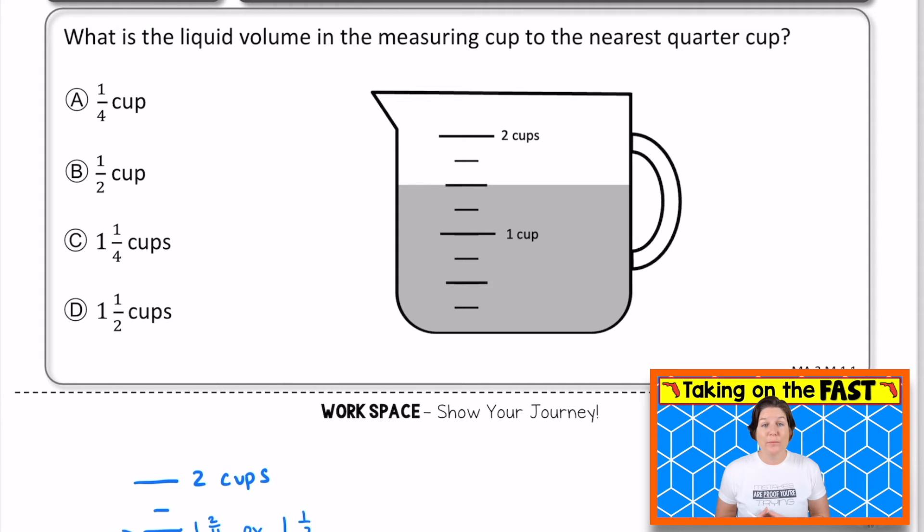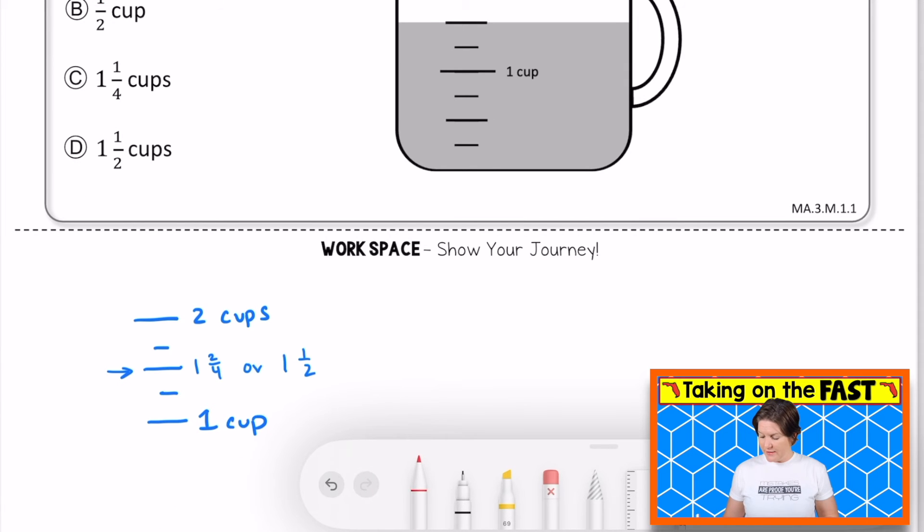The next problem is our multiple choice problem of the day. So we're looking for one correct answer here. It says, what is the liquid volume in the measuring cup to the nearest quarter cup? Well, I know that a quarter equals to the nearest fourth. So if I'm jotting that down, I didn't jot that down, but I will over here.